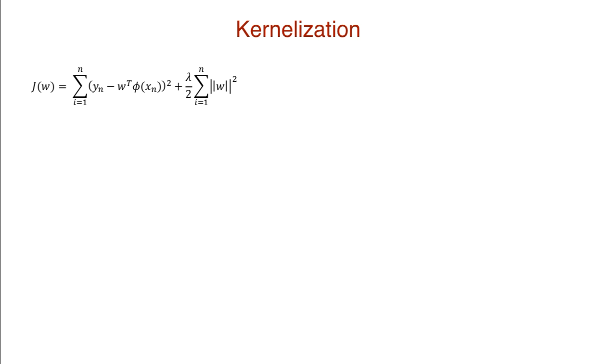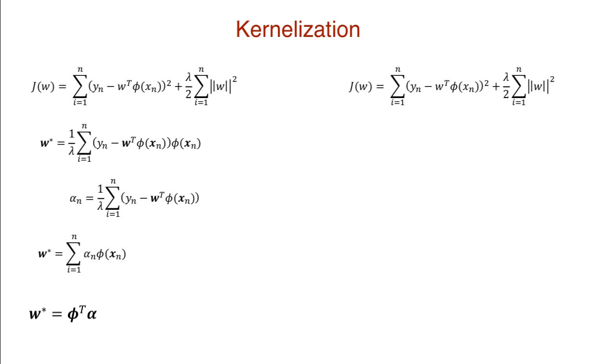So consider our ridge regression cost function, j. Taking the derivative with respect to the weight vector and equating it to 0, we solve for w. To make things easier to look at, we'll call the first part alpha. So the weights become the dot product of the basis function and alpha. Once again, consider the original cost function and vectorize and substitute our weight w. Then we just keep simplifying.